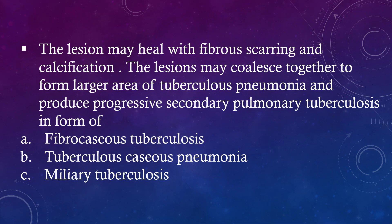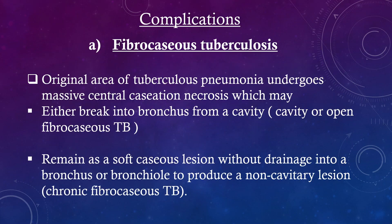The lesion may heal with fibrous scarring and calcification. The lesions may coalesce together to form a larger area of tuberculosis pneumonia and produce progressive secondary pulmonary tuberculosis in the form of fibrocaeous tuberculosis, tuberculosis caeous pneumonia, or miliary tuberculosis.